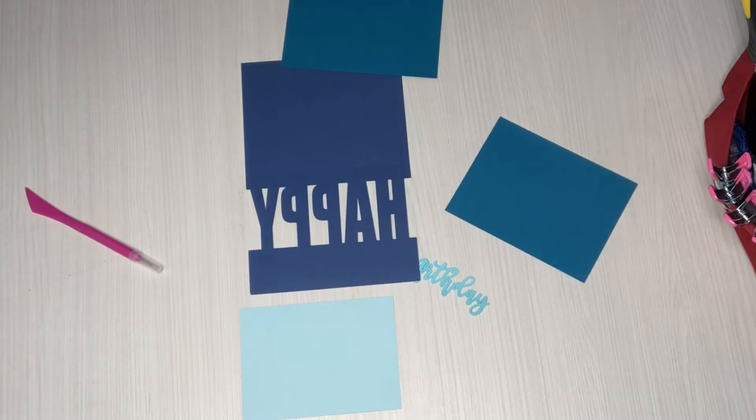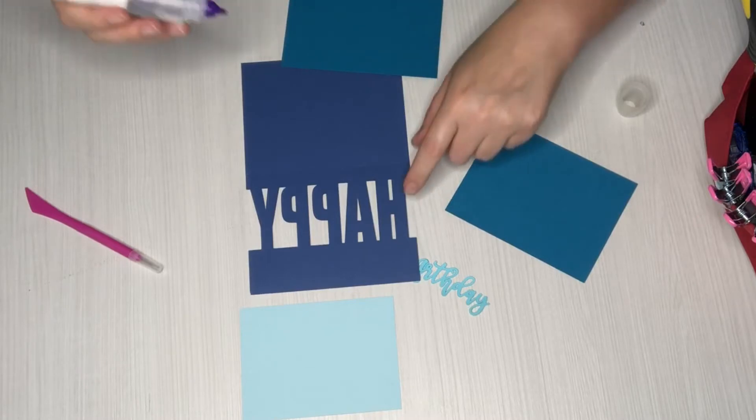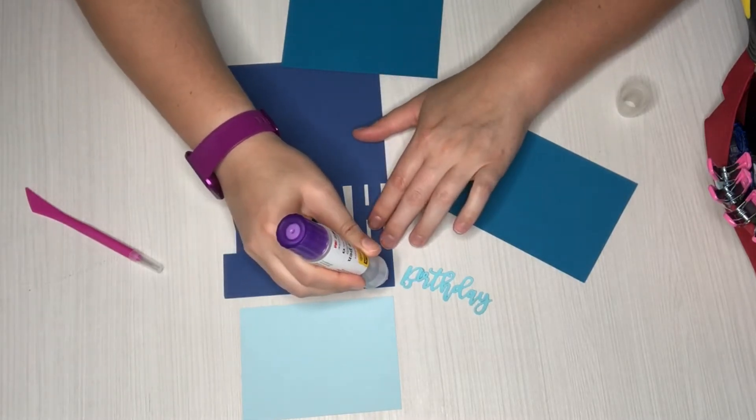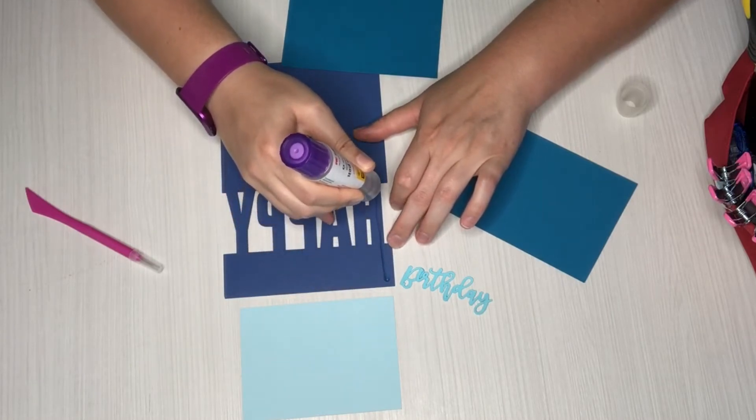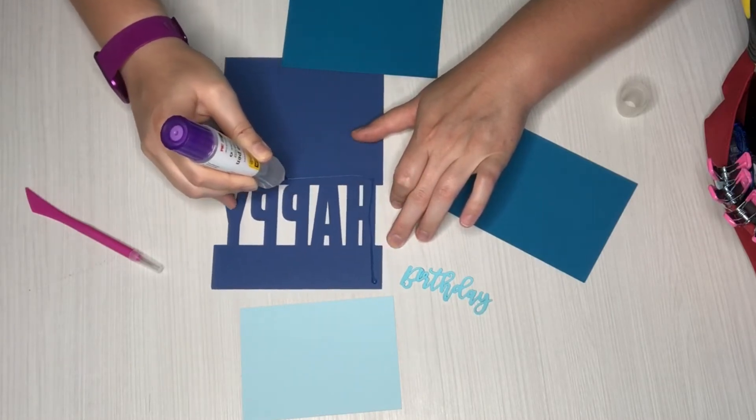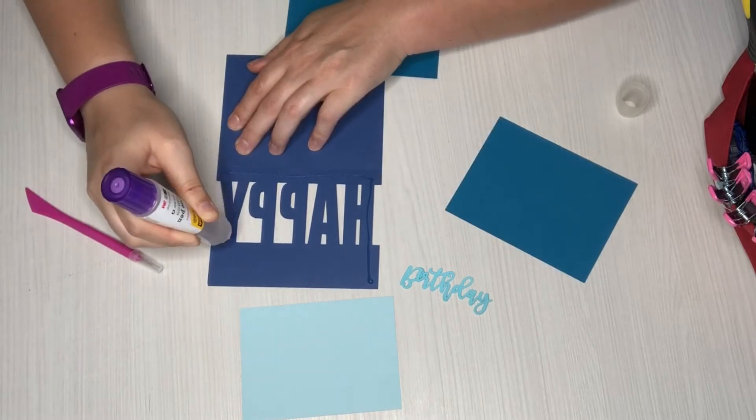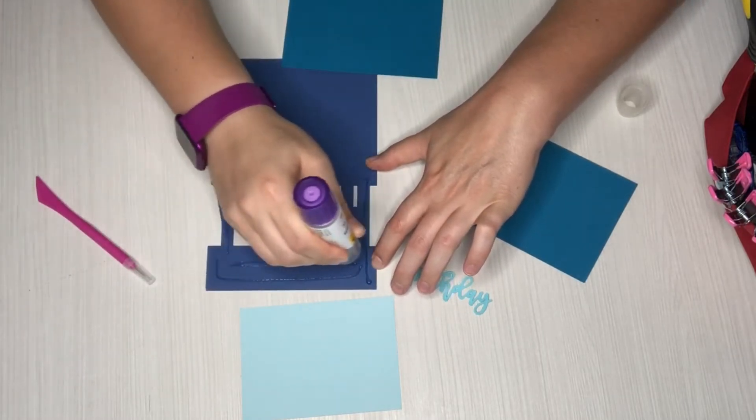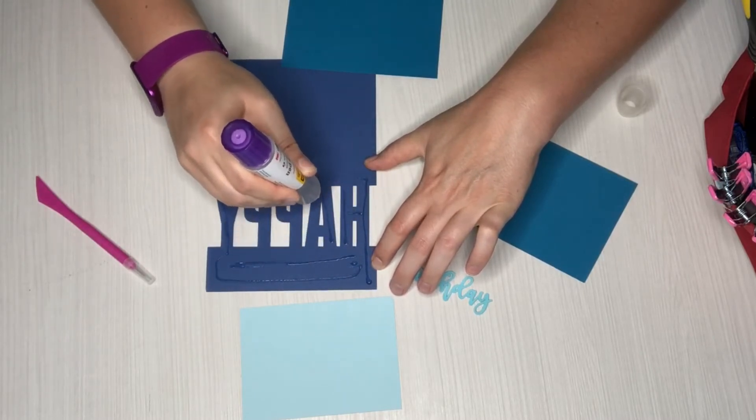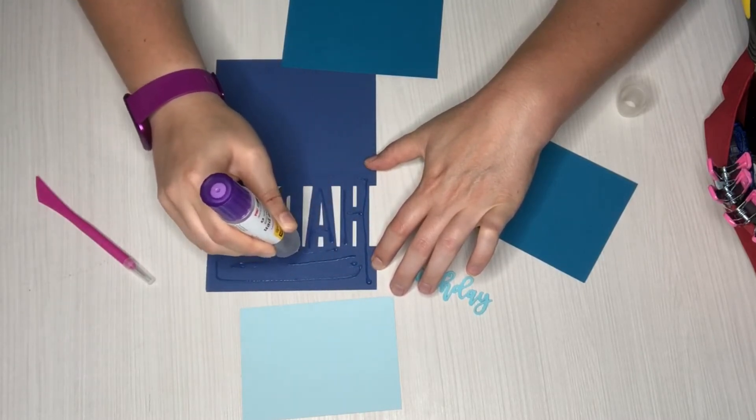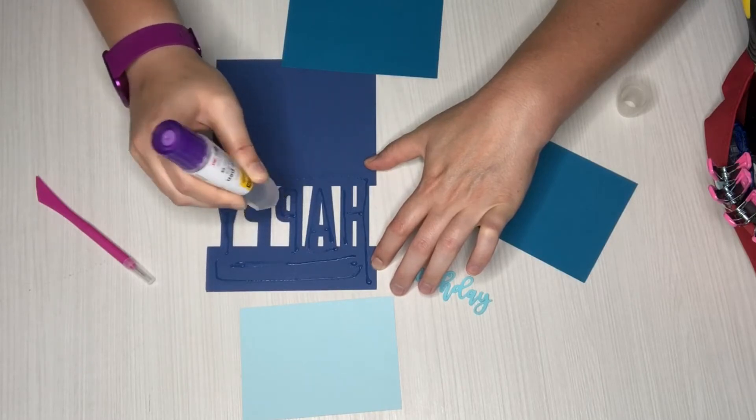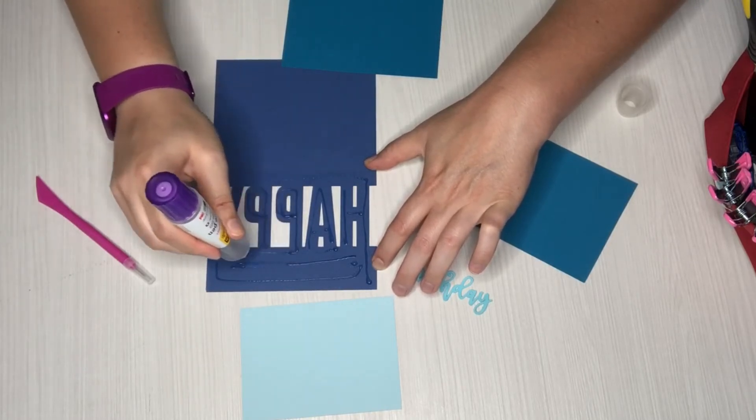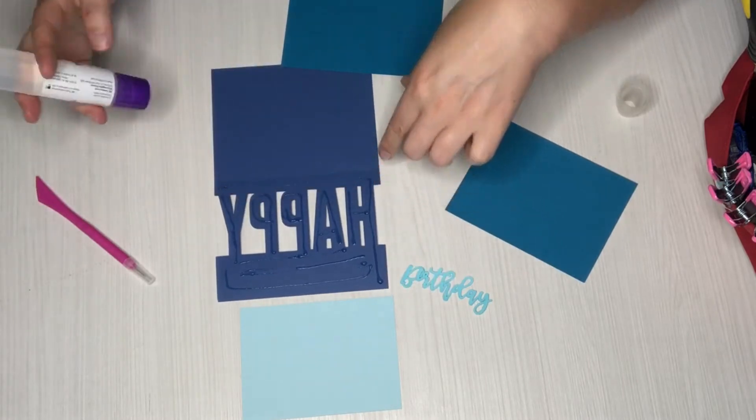So I'm gonna go ahead and put some glue on the back side of the word happy so I know where to put it, and then I'm gonna put it on the little letters here as well. I'm just gonna quickly try to apply a thin layer of glue and I want mine to adhere to all these letters. If you want yours to be more of a shadow piece you wouldn't want to put glue behind your letters.